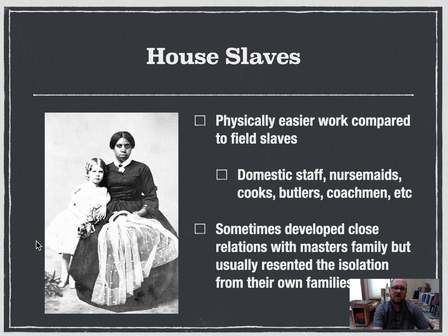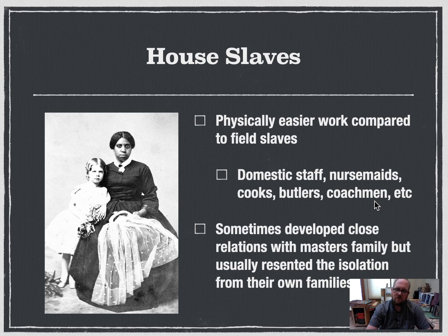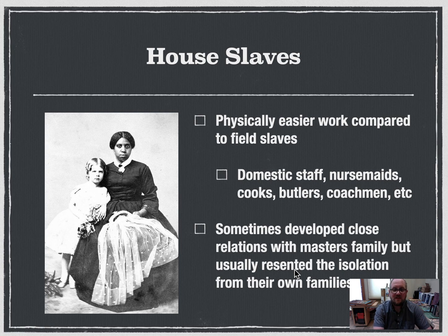Some of the house slave roles included nursemaids, who would tend to babies, nannies, cooks, butlers, and coachmen — the people driving carriages to town. In some cases, house slaves even had separate quarters, because if you were a nursemaid, you had to be in the house to tend the baby in the middle of the night. Sometimes these house slaves would not return to their slave quarters for several days, leading to a lot of isolation.